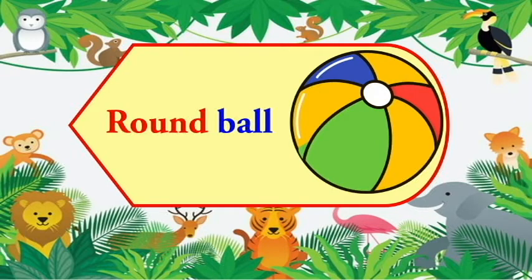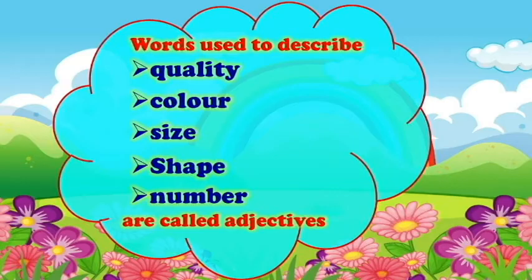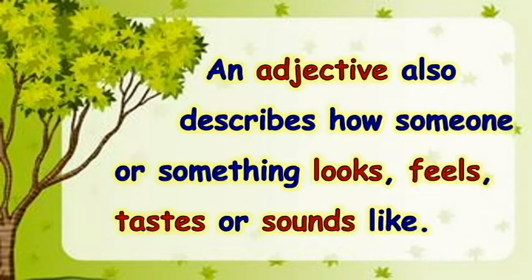Round ball — in this sentence round is the adjective. Words used to describe quality, color, size, shape, and number are called adjectives. An adjective also describes how someone or something looks, feels, tastes or sounds like.